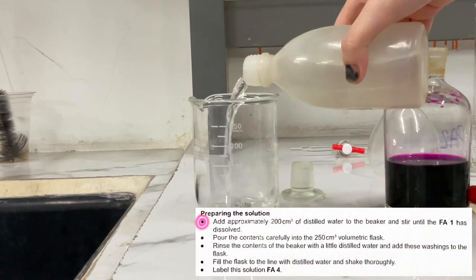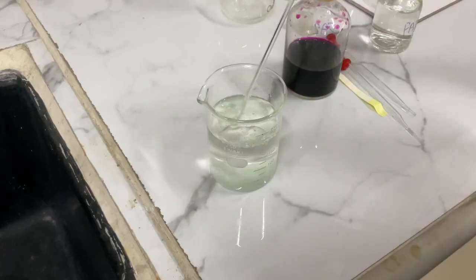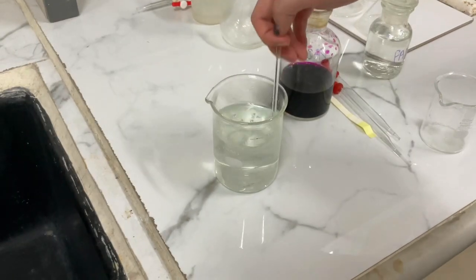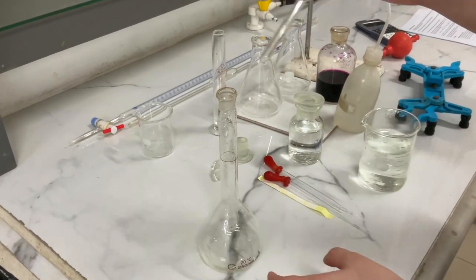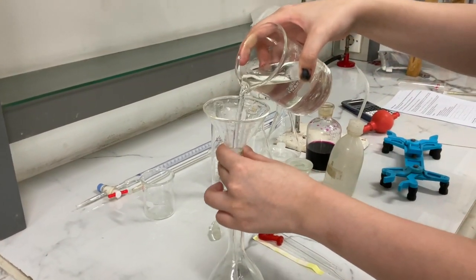Preparing the solution. First, add approximately 200 cm³ of distilled water to the beaker and stir until the FA1 has dissolved. Be sure to stir until the solution is completely clear. Pour the contents carefully into the 250 cm³ volumetric flask and use a funnel to prevent any spillage.